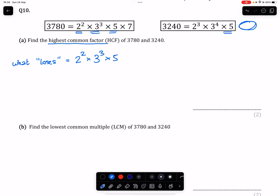And there are no 7s here, which means we do not have any 7s there. What that's going to do is that's going to give us the highest common factor of 540.